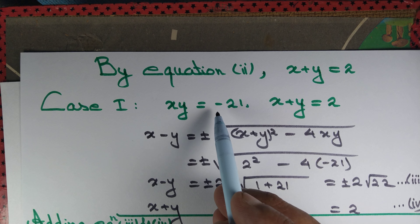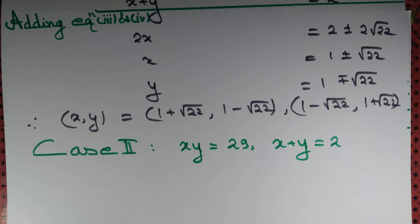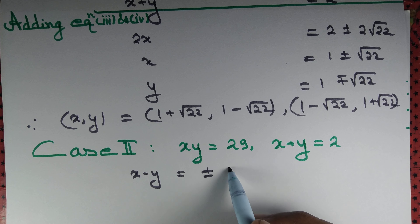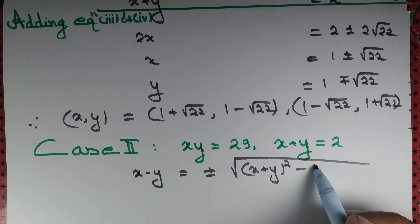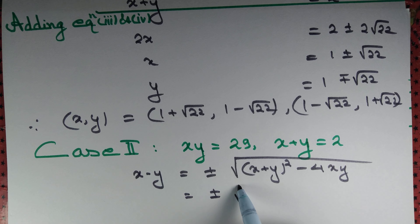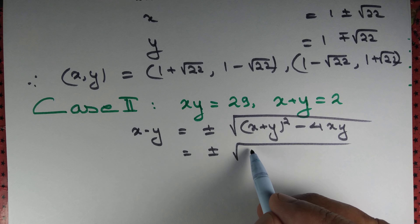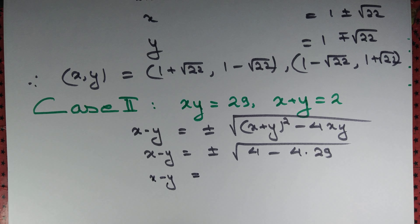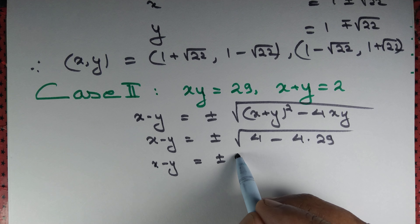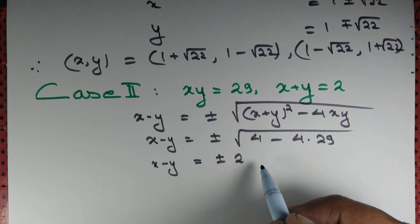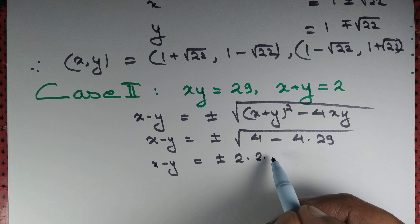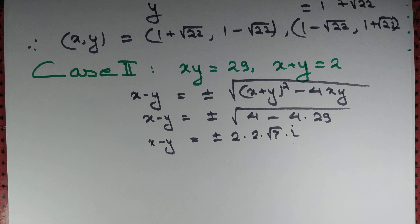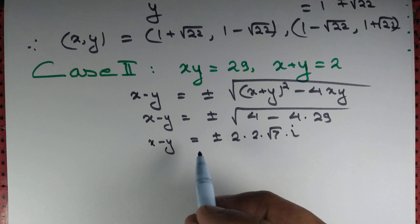For Case 2, xy = 29 and x + y = 2. We compute x - y = ±√((x+y)² - 4xy) = ±√(4 - 4·29) = ±√(4 - 116) = ±√(-112). This gives complex numbers: √112 = 4√7, so x - y = ±4i√7 = ±2·√7·i. If we restrict to real numbers there is no real solution for this case, but allowing complex numbers we continue.